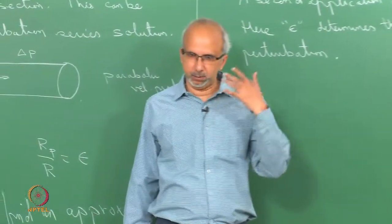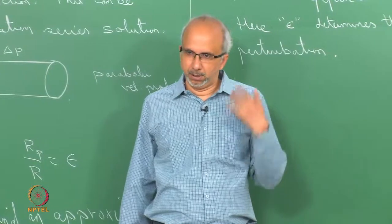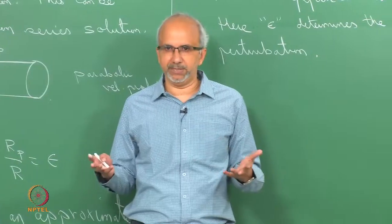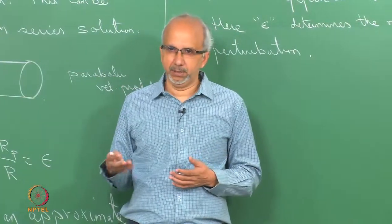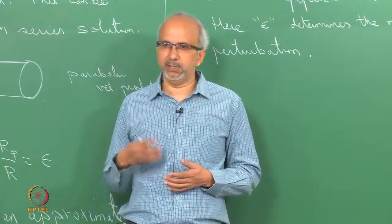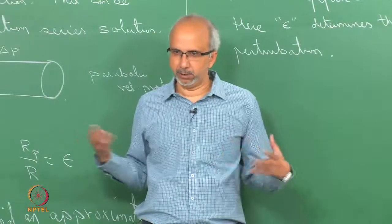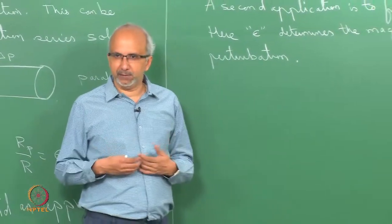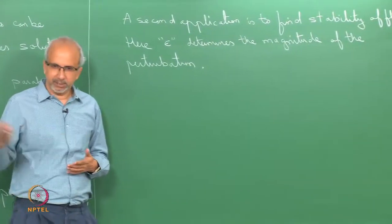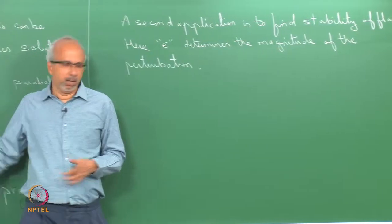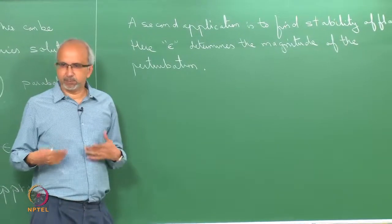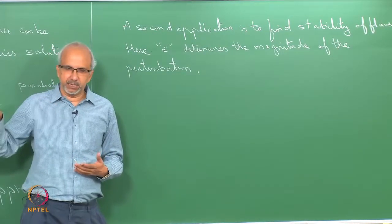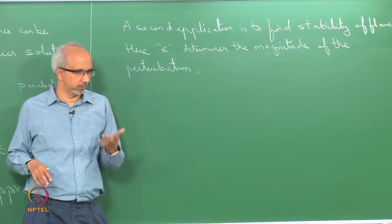In the first case, the parameter epsilon occurs naturally in the equation and you find out how things behave for small epsilon — you do a Taylor series expansion. Now in the second case, epsilon does not really occur in the system, but you are going to give epsilon-order perturbations and see how they are going to grow.